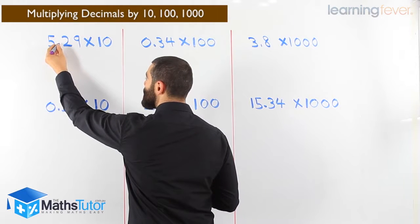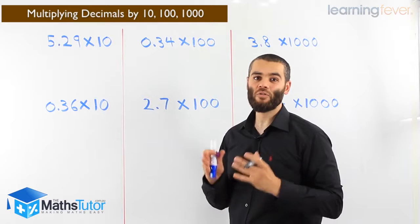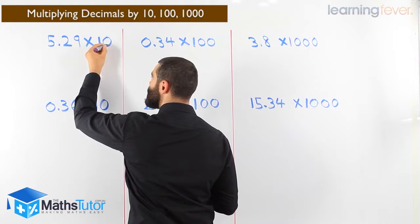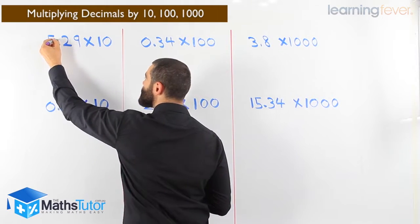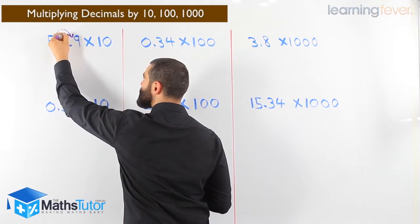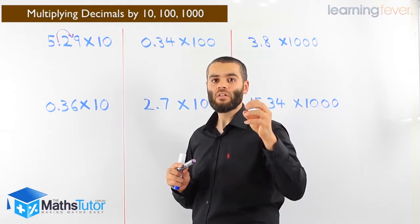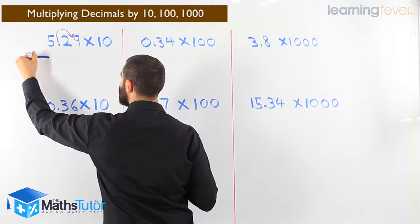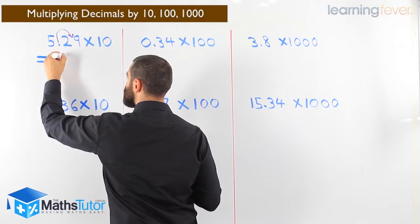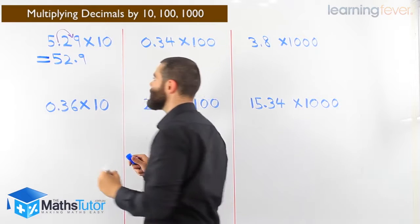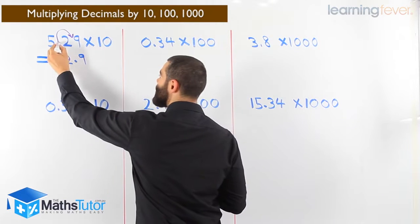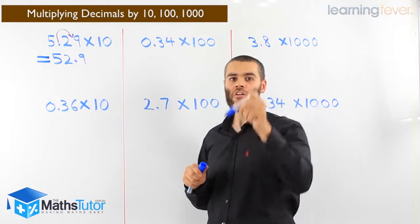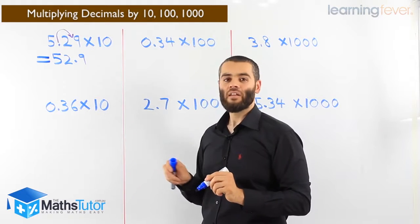Let's see how it's done. The decimal point here, we want to move it to the right. When we multiply by ten, hundred, or thousand, we move to the right. 5.29 times ten - ten has one zero, so we move once to the right. We carry the point and move it once to the right. Our answer will be 52.9. See how we move the point once to the right because we're multiplying by ten. Let's see another example.